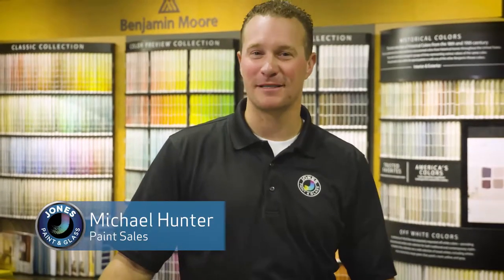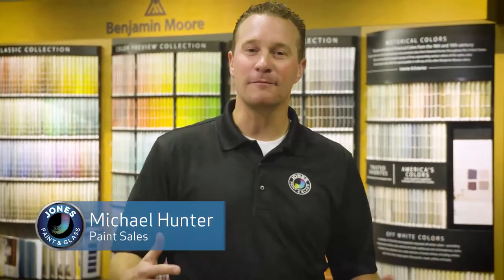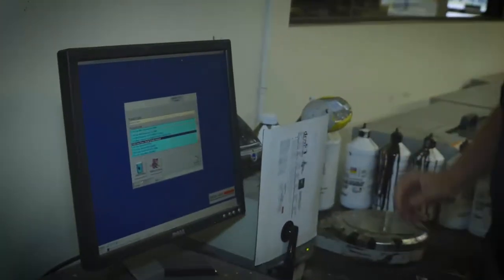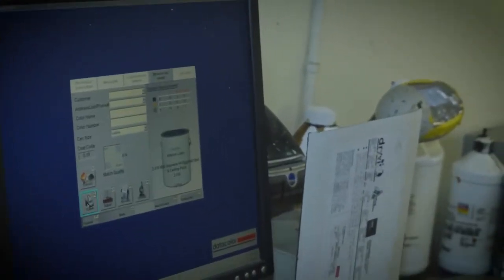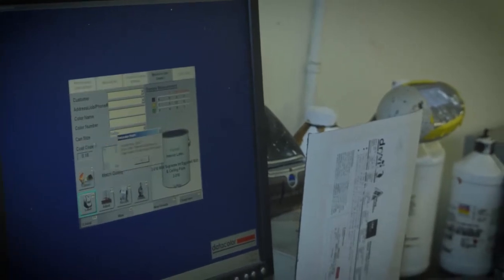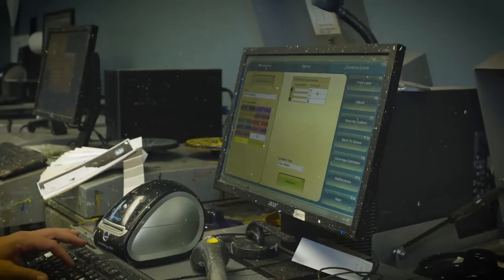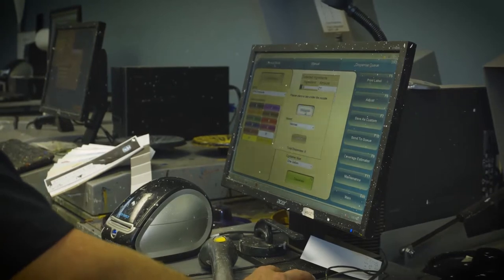If a customer comes in and they need a specific color match, we will bring it in and we have an electronic eye that senses the different pigments in that color. We can take that and apply it to our machine, and the machine will apply different percentages of the pigments necessary to get the correct color match.